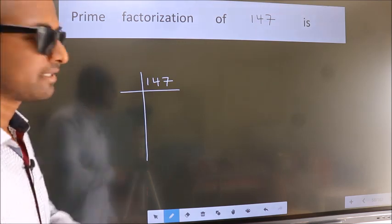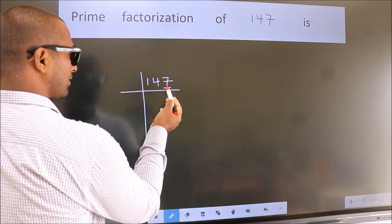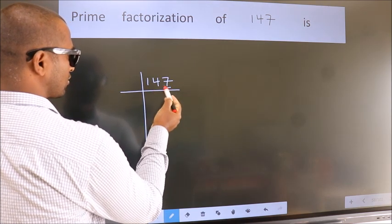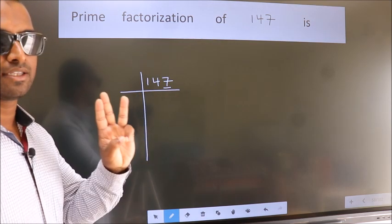Next. In this number, the last digit is 7, which is not even. So this number is not divisible by 2. Next prime number, 3.